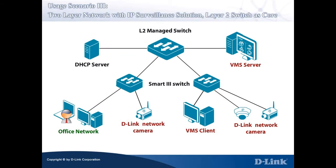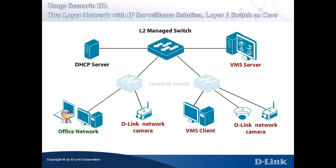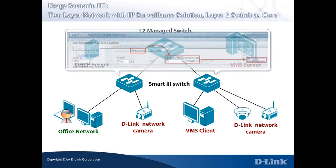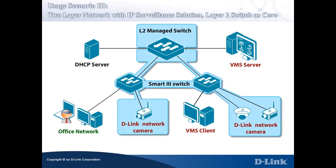For D-Link Smart 3 Switches, we need to enable the Auto Surveillance VLAN feature by clicking on the Enabled button. Because the Smart 3 Switches have a link connecting upward to the Layer 2 Managed Switch and the Trunk Link carries multiple VLANs, you have to input uplink port 10 in the tagged uplink/downlink port in the Auto Surveillance VLAN settings of the Smart 3 Switches. Click Apply to apply the setting. The network cameras will be recognized by the Smart 3 Switch and placed in the Auto Surveillance VLAN.